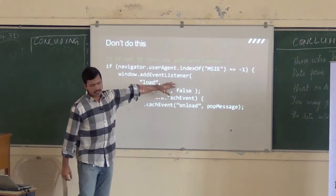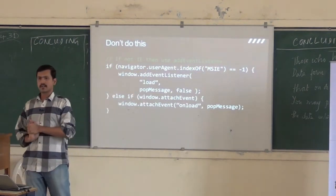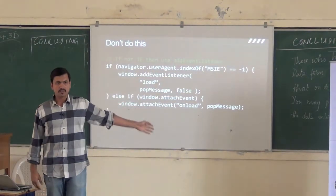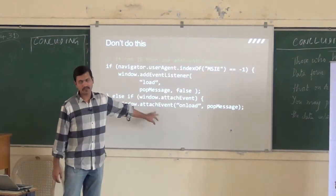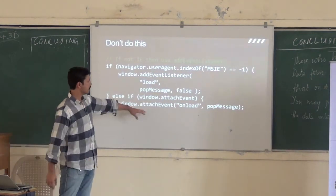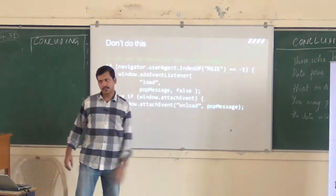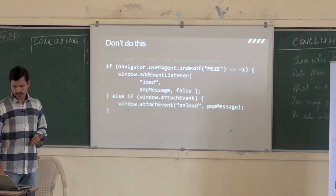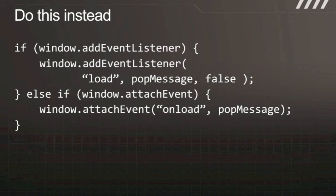addEventListener is the W3C way of adding an event handler for a particular event. attachEvent is Microsoft IE proprietary — and this is deprecated. So newer versions of IE will not have it; it might go away at any time. So you want to do addEventListener whenever you can. This particular code checks if you are IE — if not, it says addEventListener, otherwise it calls attachEvent. The problem with this is, with IE9, addEventListener is now available — IE9 and IE10 support addEventListener.